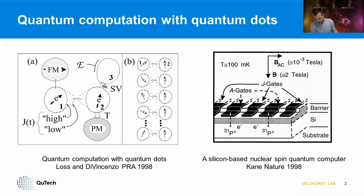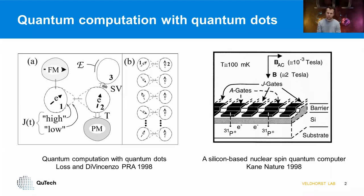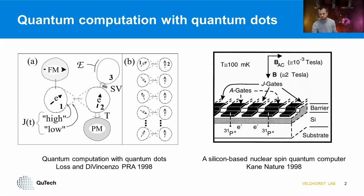When I started my postdoc at UNSW, Andrea Morello would tell me that it's really crucial to build up a relationship with your qubits — going even so far as saying you need to hack your fridge because a qubit has a personality. That was really true at the time. But I think one of the big challenges in our field is: can we make quantum dots so good that they don't have a personality anymore? That's something I want to discuss today.